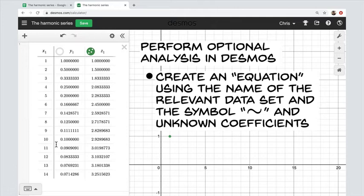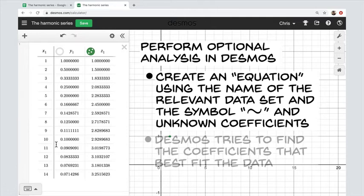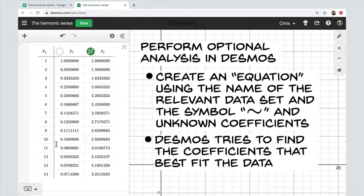And if you use unknown coefficients in your equation, basically what you'll be doing is telling Desmos to try to find a relationship of that form that best fits the data. So Desmos then tries to give you back the best choice of those coefficients.